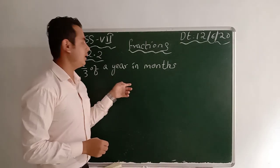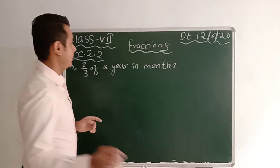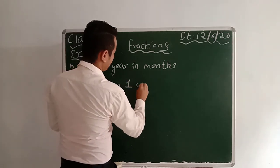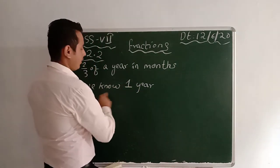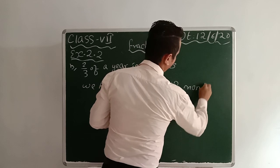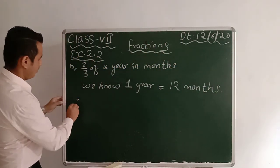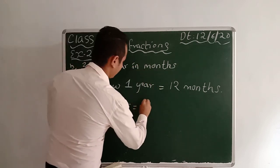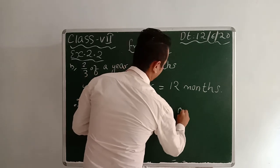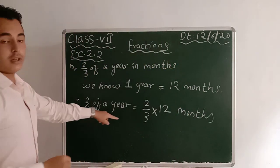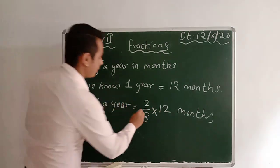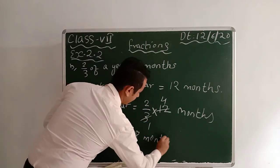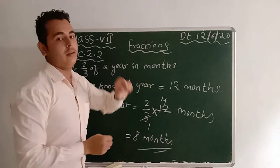Here is another question: 2/3 of a year in months. We know 1 year equals 12 months. A year and 1 year are the same, don't get confused. Therefore 2/3 of a year means 2/3 into 12 months. So 2/3 into 12: 3 fours are 12, 4 twos are 8 months. So 2/3 of a year means 8 months.